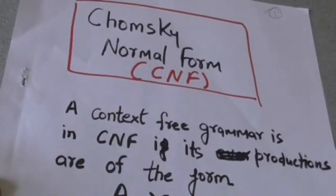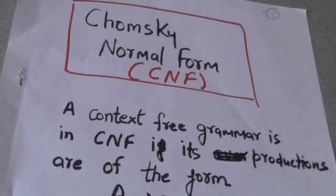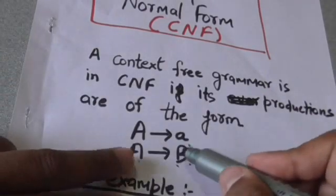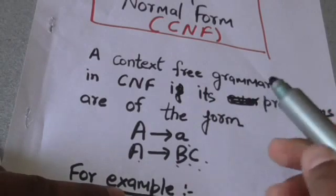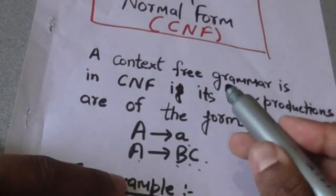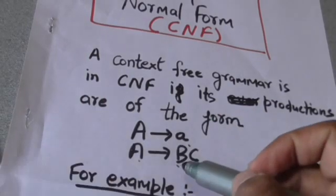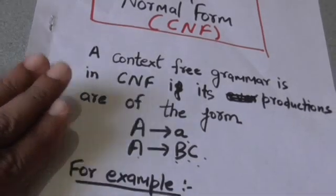Hello friends, welcome back. In this tutorial we will study about CNF. The full form of CNF is Chomsky Normal Form. A context-free grammar is in Chomsky Normal Form if its productions are of the form A derives a (a single terminal) or A derives BC (two variables). That means a grammar is in CNF if its productions have a single terminal on their right-hand side or two variables on their right-hand side.